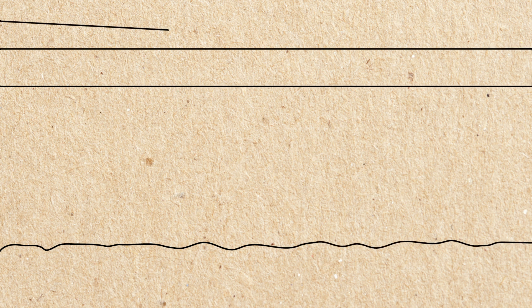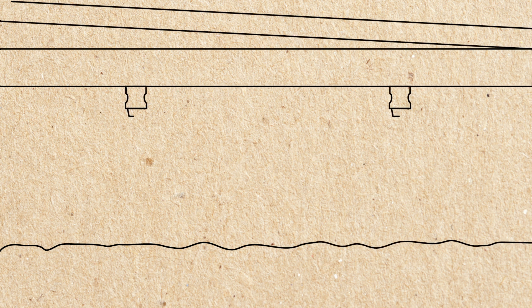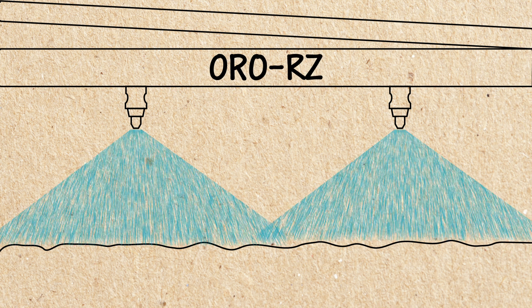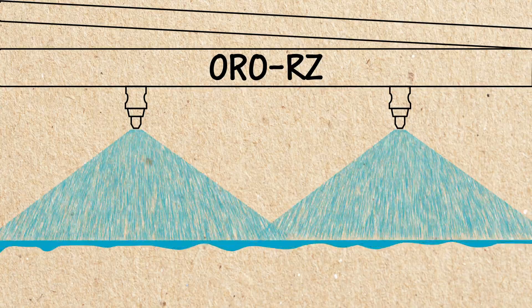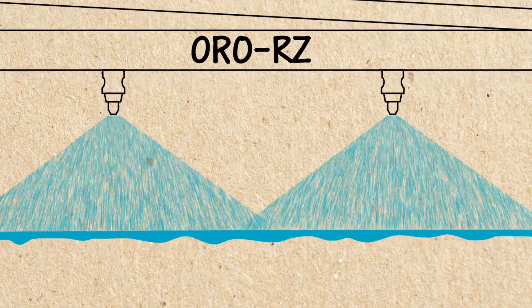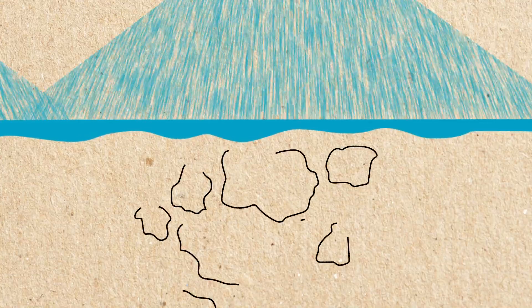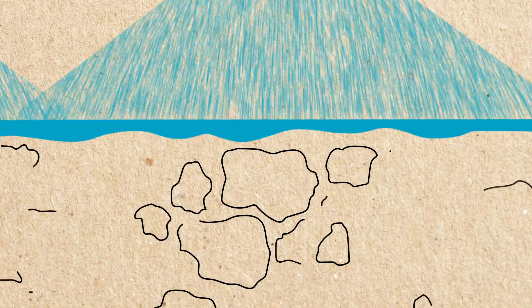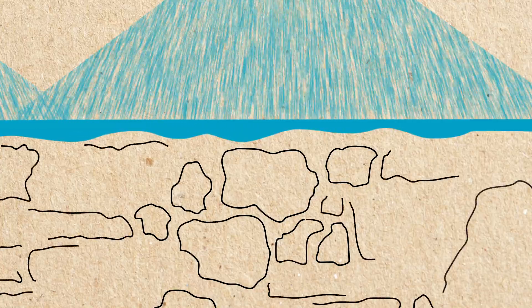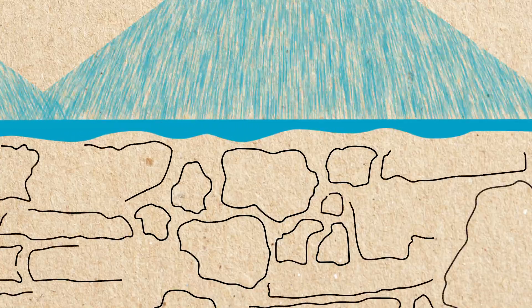Setting the stage for optimizing nutrient uptake. ORO-RZ is a soil adjuvant that reduces the surface tension of water so it can penetrate the soil surface and flow throughout the soil profile. The reduced surface tension of the ORO-RZ treated water allows it to flow easily into pore spaces, so water and nutrients are distributed vertically and horizontally in the soil profile.